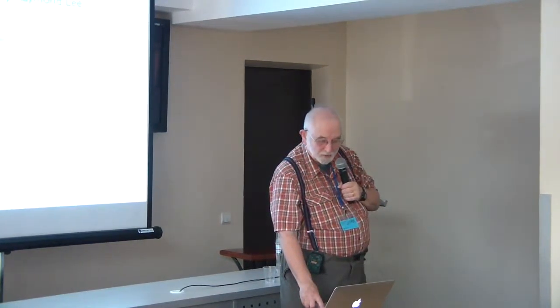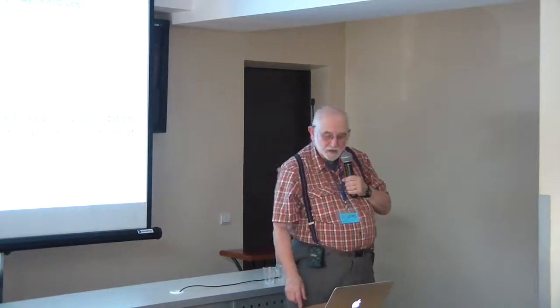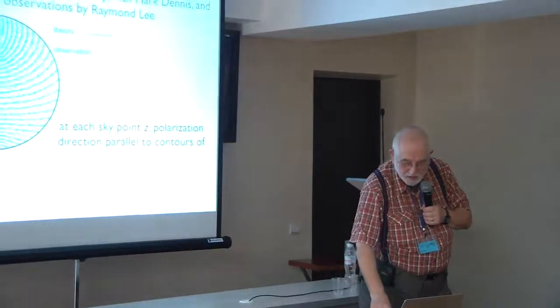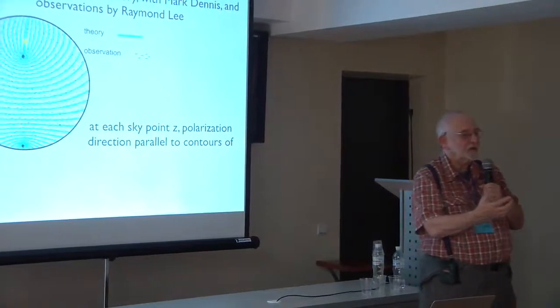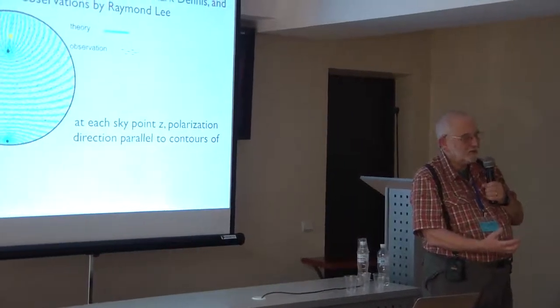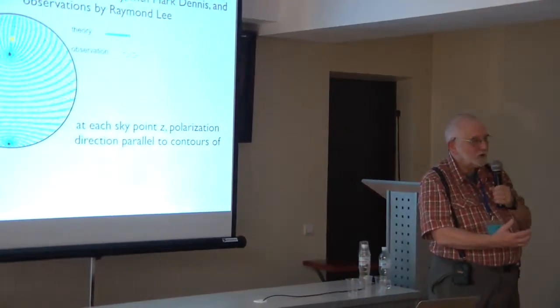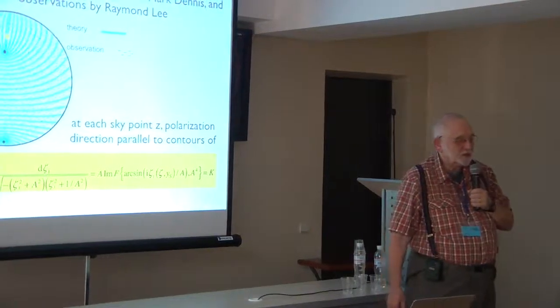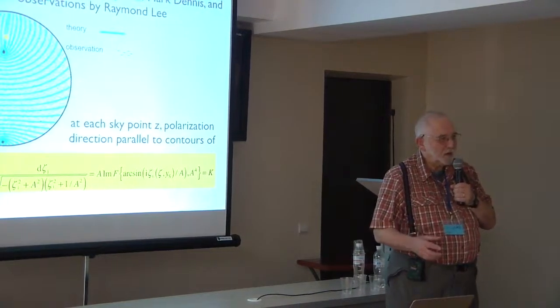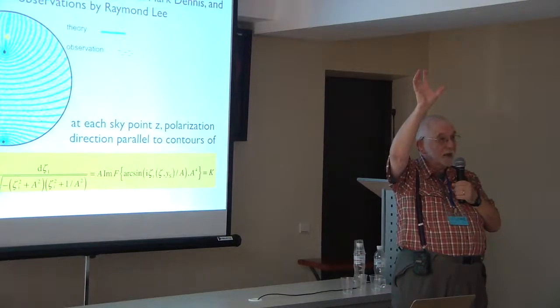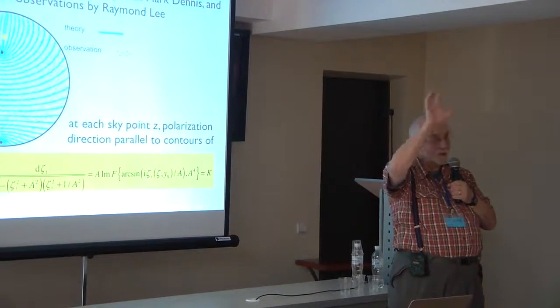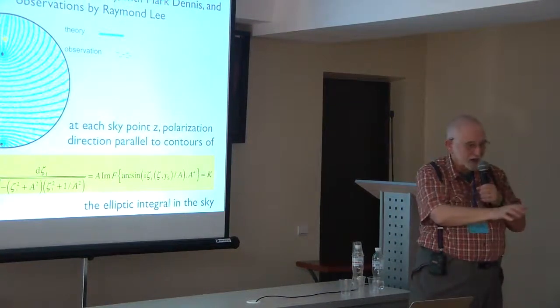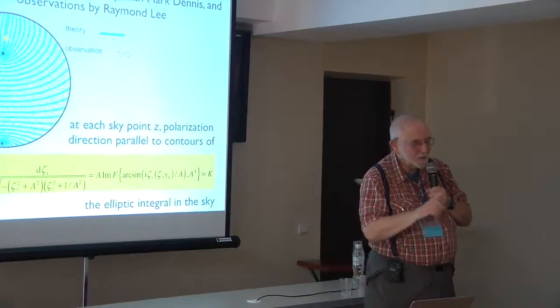Now I want to make a mathematical point. At each point in the sky, I call it Z, the polarization direction, these blue lines, they're contours of a function. It's a mathematical function that normally you don't associate with any observable phenomenon. It's called an elliptic integral, don't worry about the details of it. But just to make the point that there exists in the sky every day, but we don't see it. Some creatures do, bees can, an elliptic integral. So it's an elliptic integral in the sky.